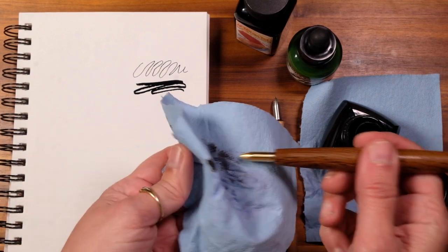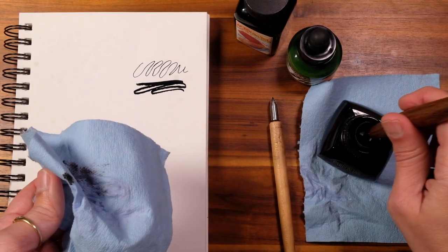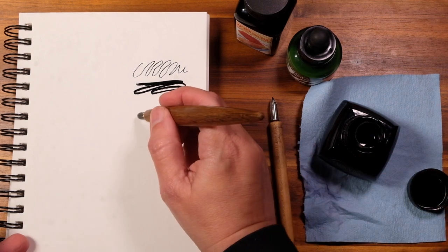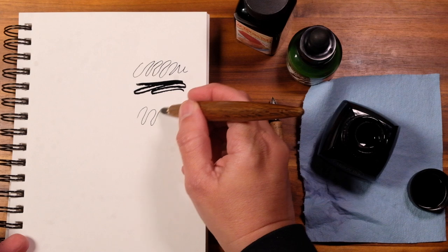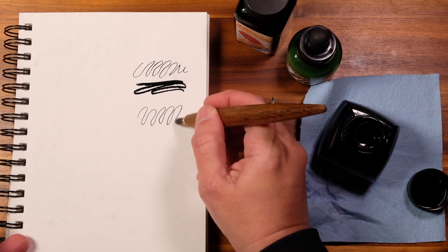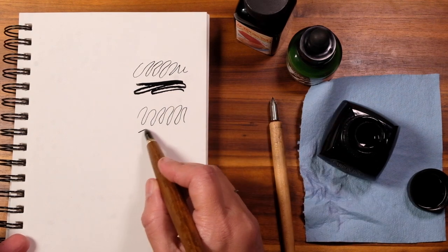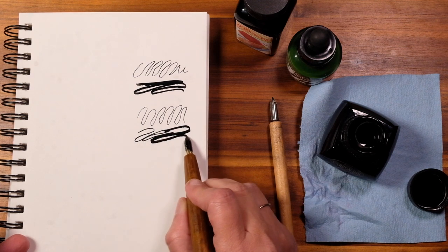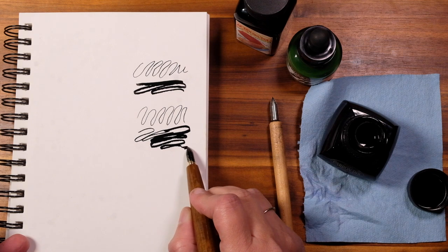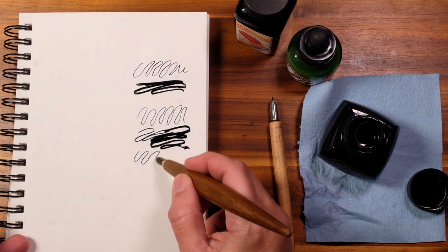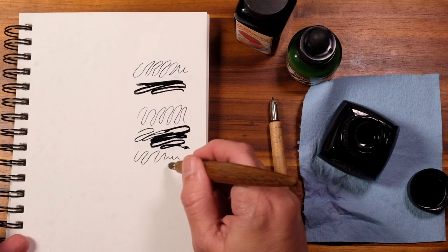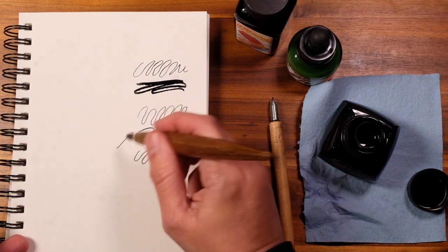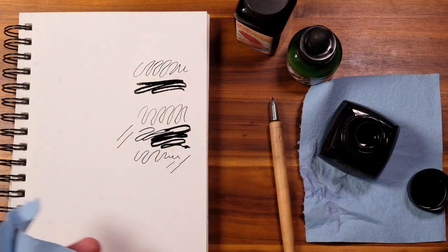Now, they say this one's better for sketching. So, this definitely, you can feel it pull a lot more on the paper. It's definitely not as smooth as the other one. The brass has a lot more pull. I don't know if you can hear that or not. It definitely pulls on the paper more.